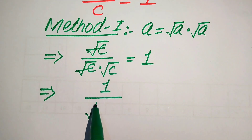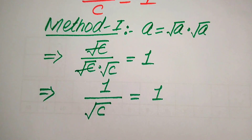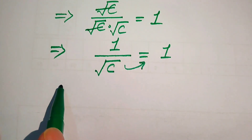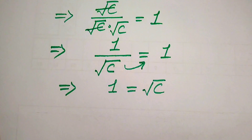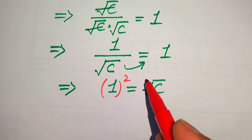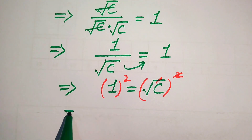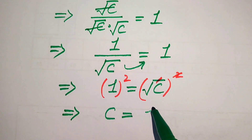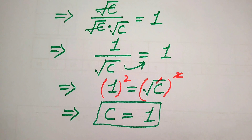After cancellation, we get 1 divided by square root of C equals 1. We move square root of C to the right hand side, giving us 1 equals square root of C. To find the value of C, we square both sides. The square and square root cancel on the right, giving us C equals 1 squared, which equals 1. So C equals 1 is one root of the given equation.